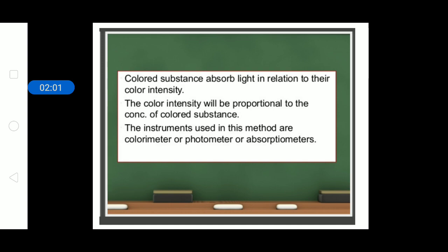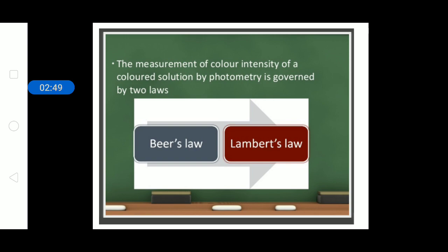A color substance has the property to absorb light in relation to its color intensity. A solution with low color intensity will absorb less light, while a solution with high color intensity will absorb maximum light. The color intensity absorbed is proportional to the concentration of the color substance present. The instrument used is called a colorimeter, photometer, or absorptiometer. Color intensity is measured using Beer's Law and Lambert's Law.